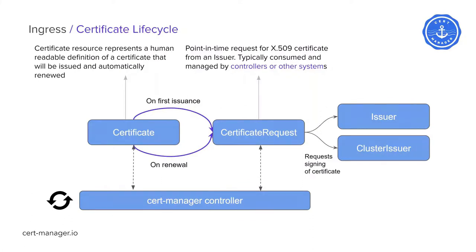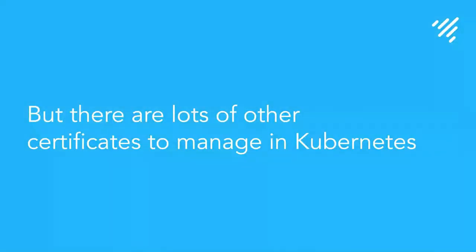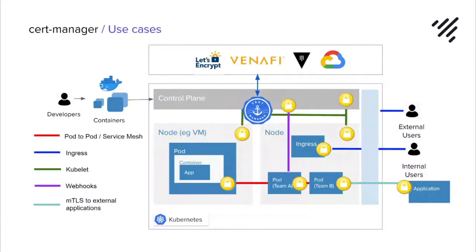You can also use these resources more directly. The ingress shim automatically provides that automation based on annotations, but you can tap into the resources CertManager provides — the certificate and the certificate request. The certificate is a more human-readable representation that you can use via the API or the shell. The certificate request is a point-in-time request made for an x509 certificate from an issuer, typically managed by controllers or other systems. The CertManager controller is responsible for reconciling these certificate and certificate request resources. Of course, there are many more certificates to manage in Kubernetes beyond just ingress certificates.